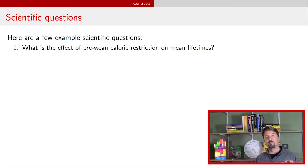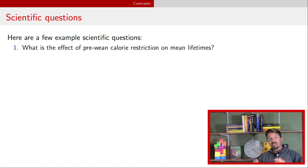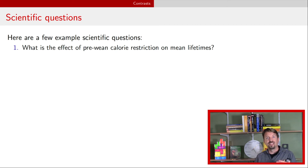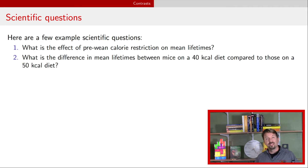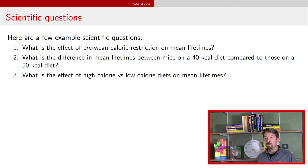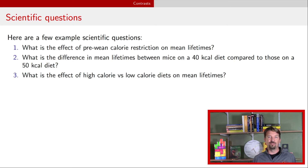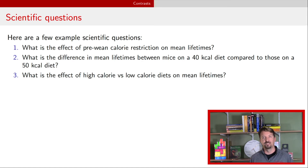Here are some of the questions we might want to ask regarding this dataset. One is: what kind of effect does pre-weaning calorie restriction have on mean lifetime? We might also be interested in the difference in mean lifetime between a 40 and a 50 kilocalorie restriction. And we might be interested in whether there's any effect of diet on mean lifetimes when there is a calorie restriction — thinking about the NN85 and NP diets as high calorie and everything else as low calorie.